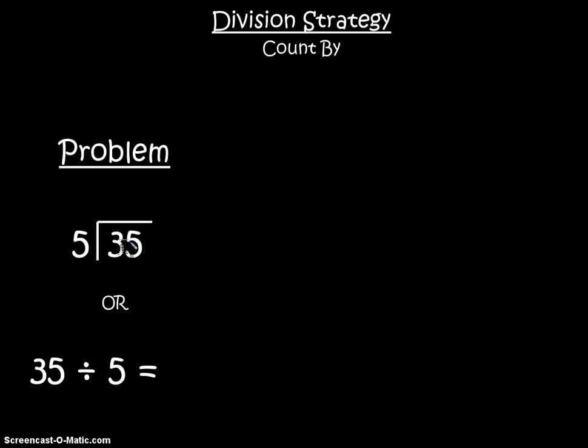Sometimes a division problem will be written like this. We can read this by saying 35 divided by 5 and our answer goes above. Or we can think of 35 divided by 5 in this way.